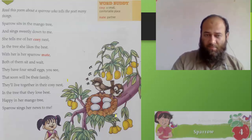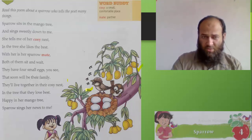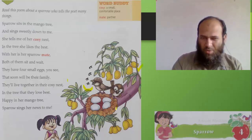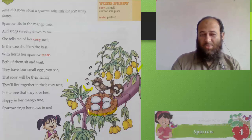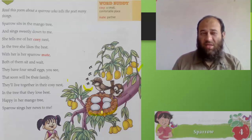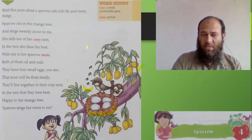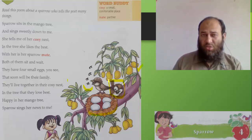The sparrow sits in the mango tree — it's a mango tree — and sings sweetly down to me. Do you see the sparrow singing? She tells me of her cozy nest; this is a very small but comfortable nest. In the tree she likes the best. She is sitting in the mango tree and she likes the mango tree very much. With her is her sparrow mate — she has a partner with her, another sparrow which is her mate.